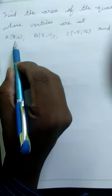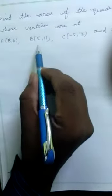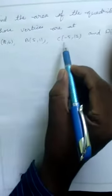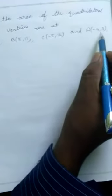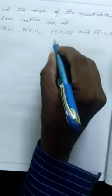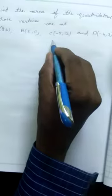Find the area of the quadrilateral whose vertices are A(8,6), B(5,11), C(-5,12), and D(-4,3). First, we draw the graph just like this.